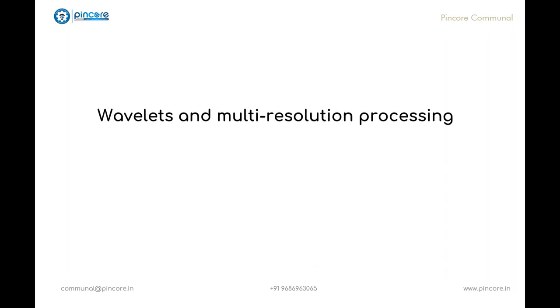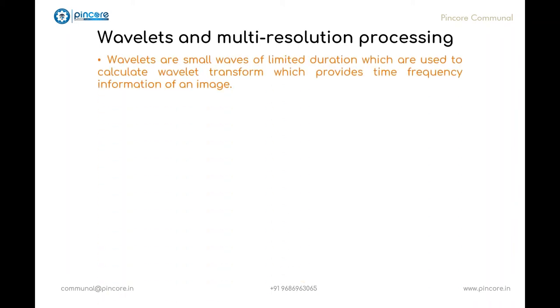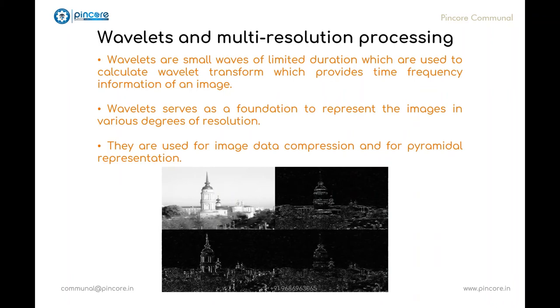We will move into the next step in digital image processing, that is wavelets and multi-resolution processing. Wavelets are small waves of limited duration which are used to calculate wavelet transform, which provides time frequency information of an image. They can detect and filter white Gaussian noise due to their high contrast of neighboring pixel intensity values. Using these wavelets, a wavelet transformation is performed on two-dimensional image and they are further used for image data compression or for pyramidal representation in which images are subdivided successfully into smaller regions.